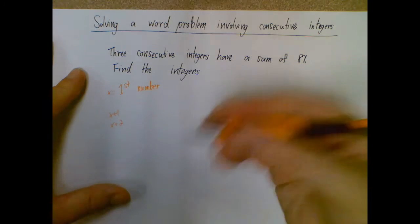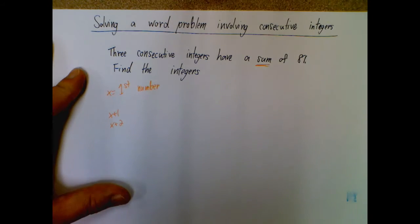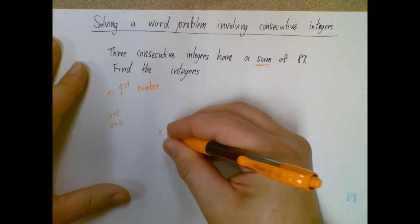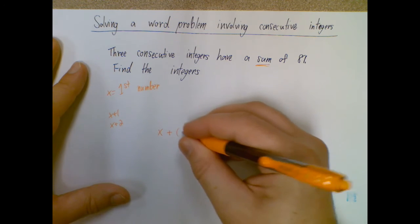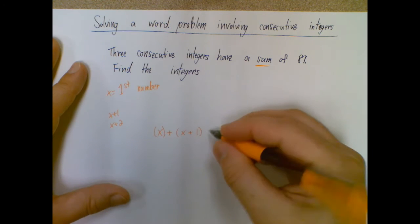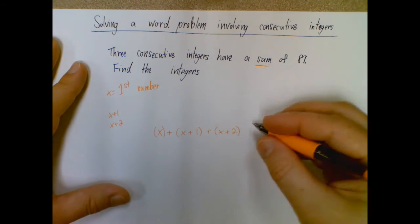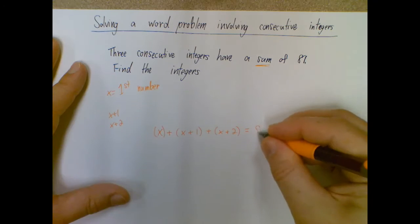So when I put those together, I want to sum, which means I'm going to be adding. So I would have x plus, and we'll put these in parentheses to make it a little bit easier to set them apart, x plus 1 plus x plus 2. I'm going to add all of those together and they have a sum of 81.